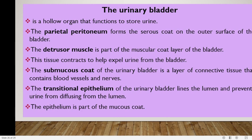From the ureter, we go to the urinary bladder. This is a hollow organ that functions to store urine. The parietal peritoneum forms the serous coat on the outer surface of the bladder. We have the detrusor muscle, which is part of the muscular coat layer of the bladder — this tissue contracts to help expel urine from the bladder. The submucous coat of the urinary bladder is a layer of connective tissue that contains blood vessels and nerves. The transitional epithelium of the urinary bladder lines the lumen and prevents urine from diffusing from the lumen.